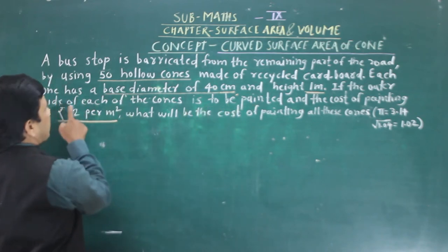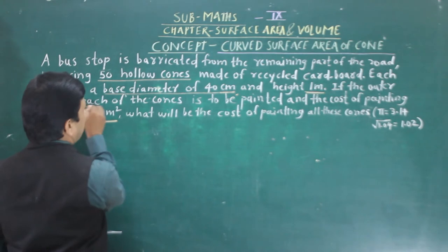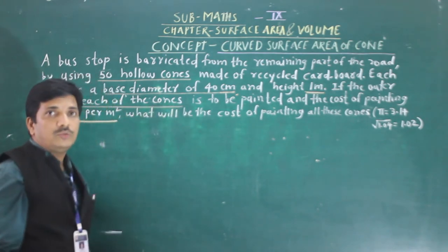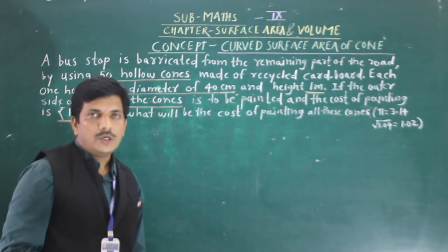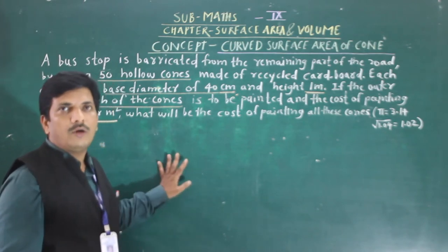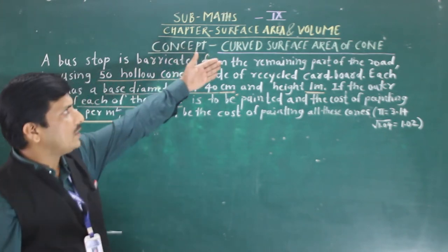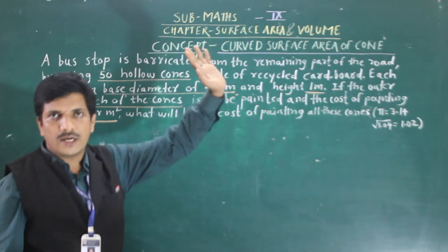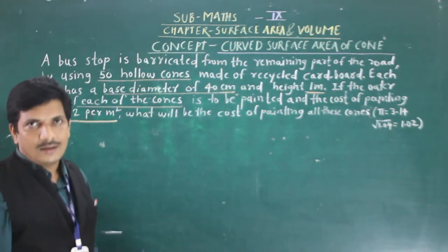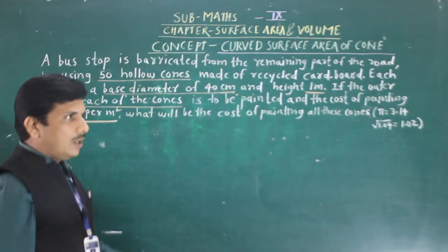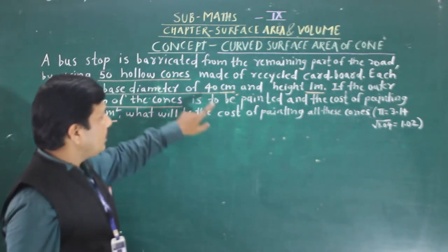We are looking at the outer side of each of the cones — the outer side of each cone. So here we need to think about curved surface area. We have to find out the curved surface area of the cone — a circular cone — using the formula pi × r × l. The value of pi is given, radius we can find out, but l (the slant height) is not given directly.